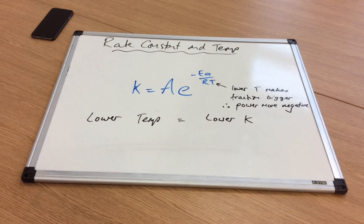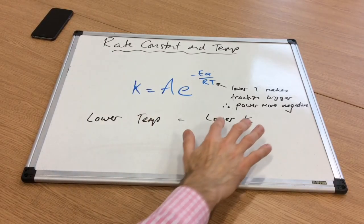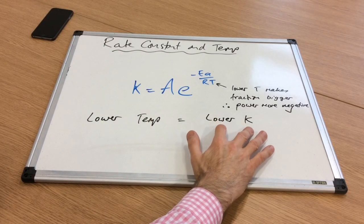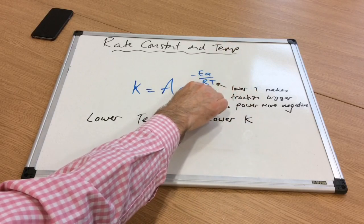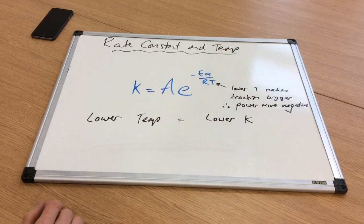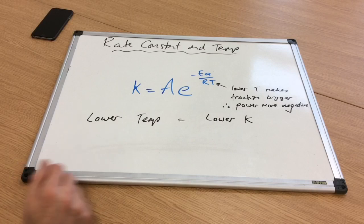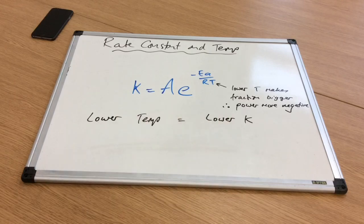The opposite of that: a lower temperature means a low rate of reaction and therefore a lower value for K. In the Arrhenius equation, a low value for T makes the fraction bigger, so we've got a more negative power, and therefore we get a lower value for K as a result.